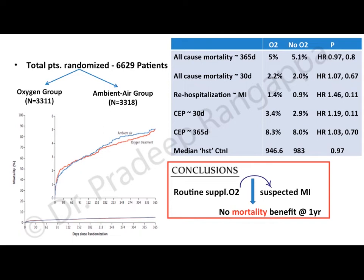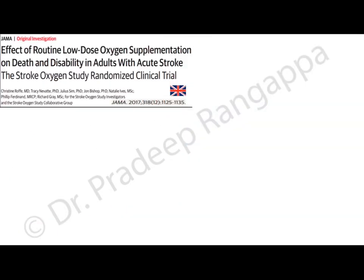A total of 8003 patients were randomized into three groups: 2668 who received continuous oxygen day and night, 2667 who received only nocturnal oxygen, and 2668 controls who did not receive oxygen unless hypoxemic. These were all stroke patients. The results were very interesting.